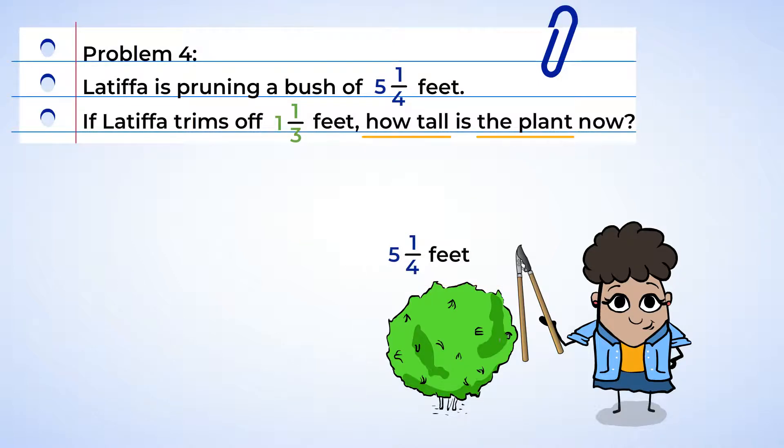Well, since we're trimming, that means that we're removing part of the plant. And removing indicates that we need to subtract. And now it's time to set up our expression. We're going to set up five and one fourth feet minus one and one third feet. And I see here that one third is greater than one fourth. And this means that we will need to take away more from the holes.